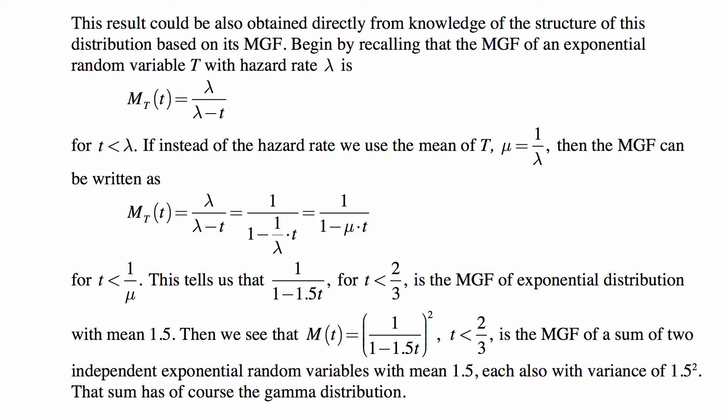This tells us that 1/(1-1.5t) for t < 2/3 is the MGF of exponential distribution with mean 1.5. Then we see that M(t) = (1/(1-1.5t))^2, for t < 2/3 is the MGF of a sum of two independent exponential random variables with mean 1.5, each also with variance of 1.5^2. This sum has, of course, the gamma distribution.